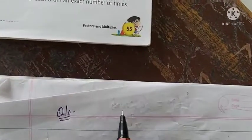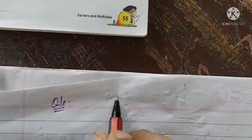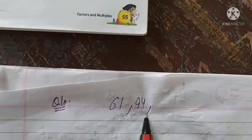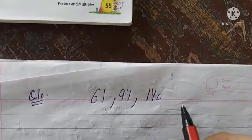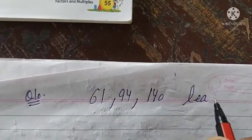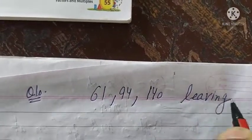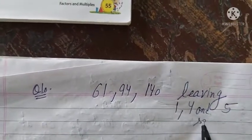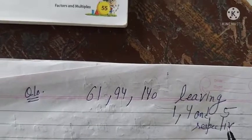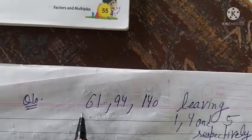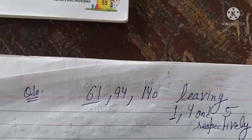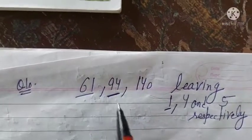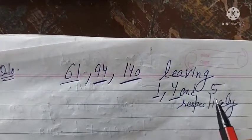Question number 10: We have to find the greatest number that will divide 61, 94, and 140, but when it divides them it will leave remainders 1, 4, and 5 respectively. So when that maximum number divides 61, it leaves remainder 1; when it divides 94, it leaves remainder 4; and when it divides 140, it leaves remainder 5.